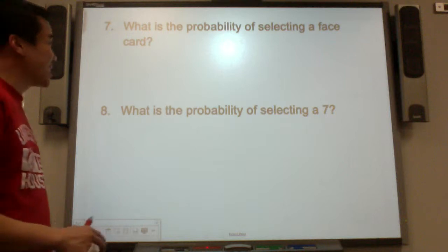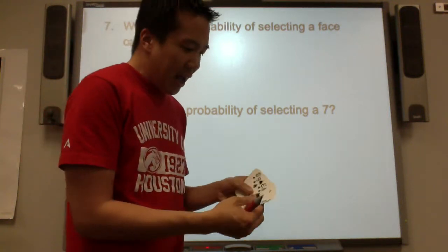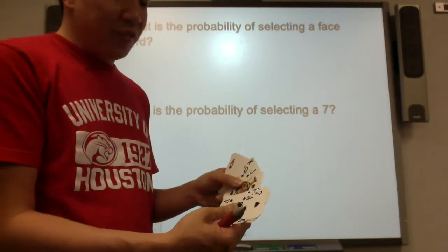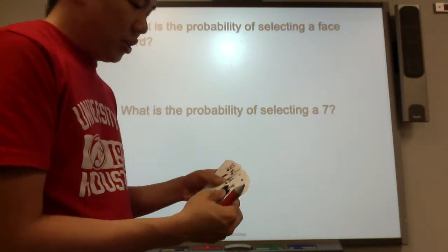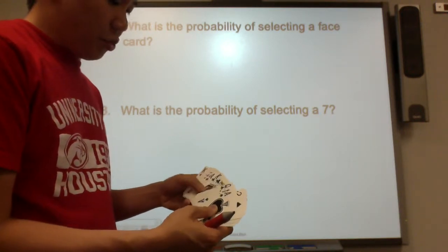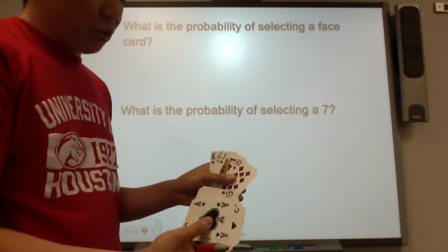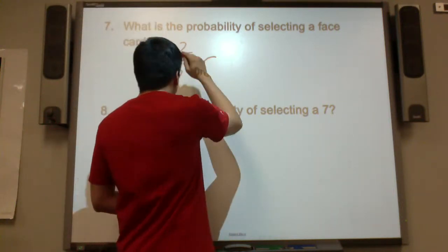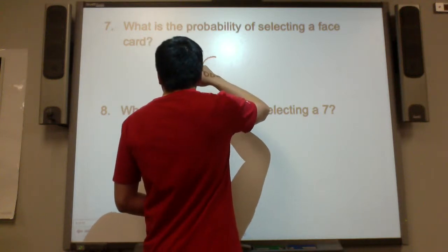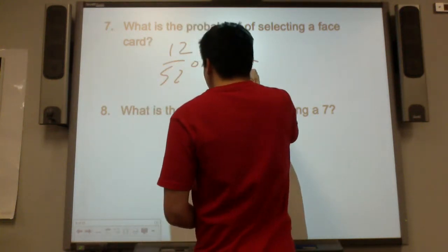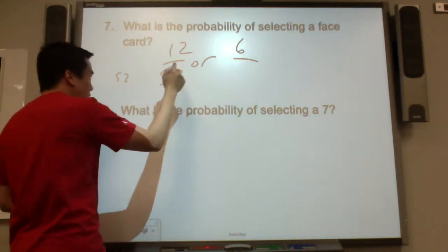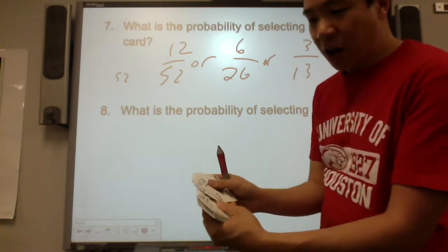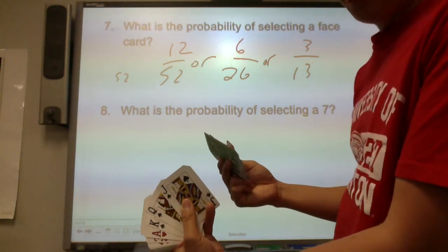Number seven. What is the probability of selecting a face card? How many face cards do you see here? One, two, three. There are three face cards for spades, three face cards for hearts, three face cards for clubs, three face cards for diamonds. That's 12 out of 52, which simplifies by dividing by two to six out of 26. Simplify it: three out of 13. Out of 13 cards in a suit, three of them have a face.